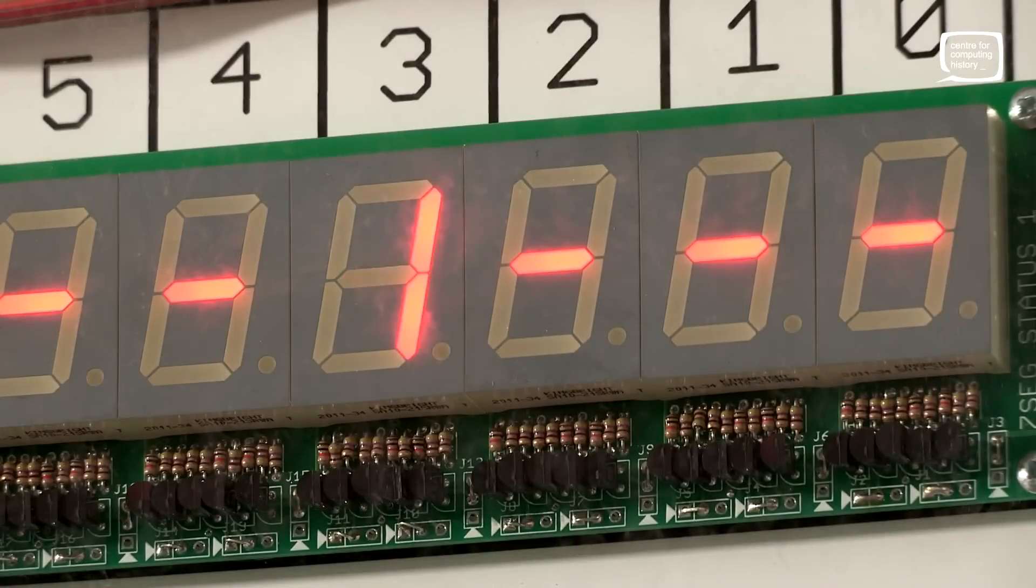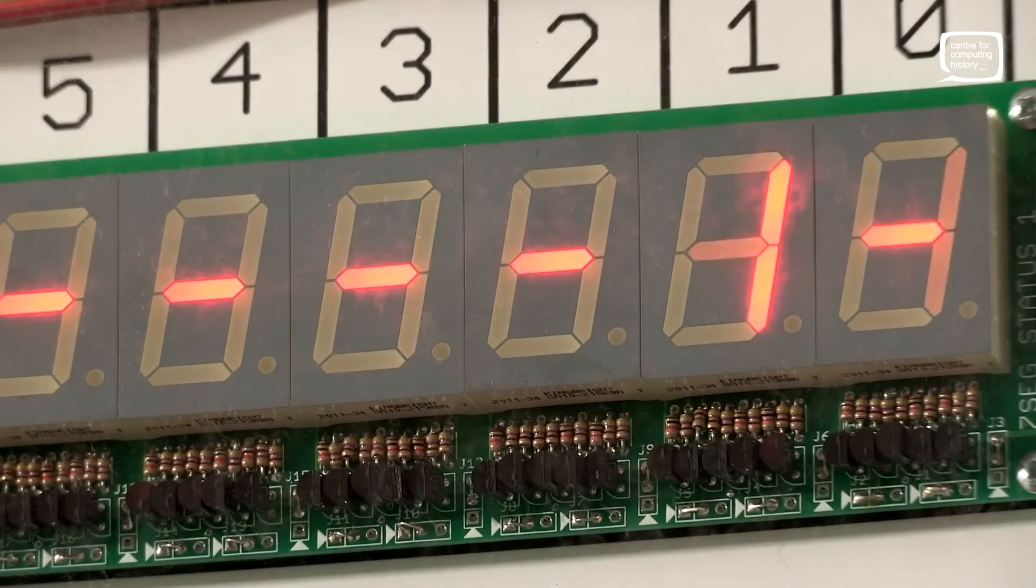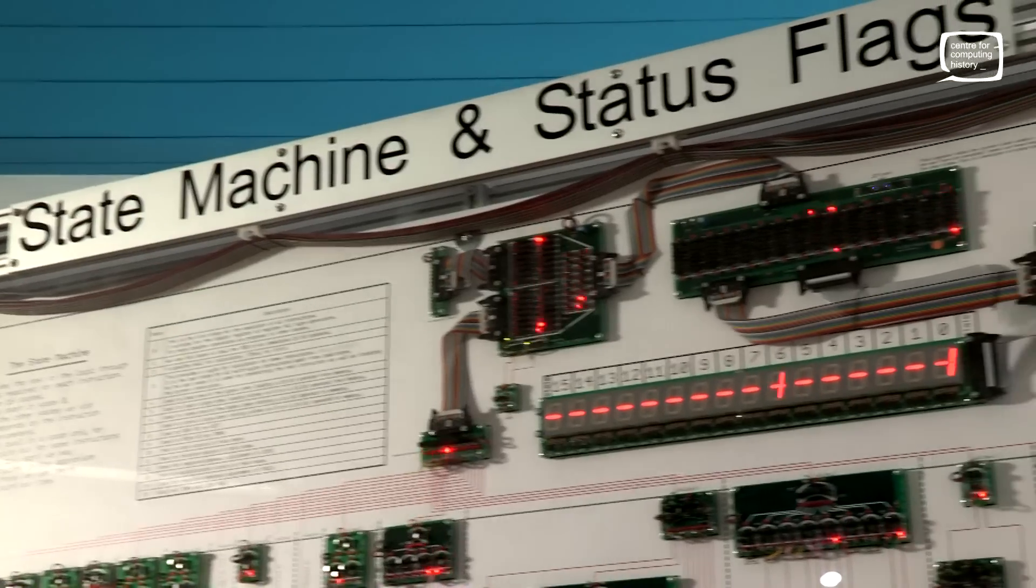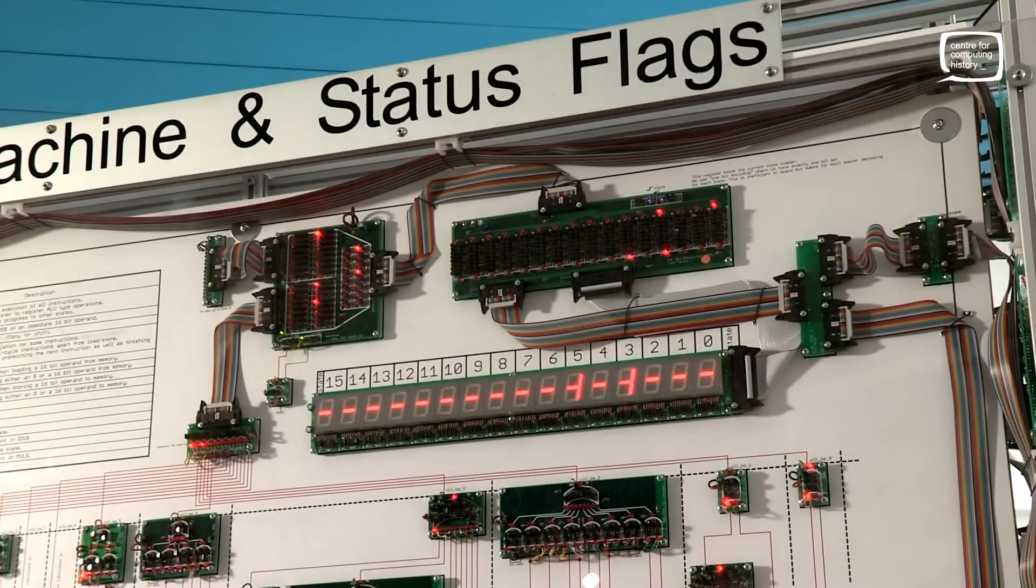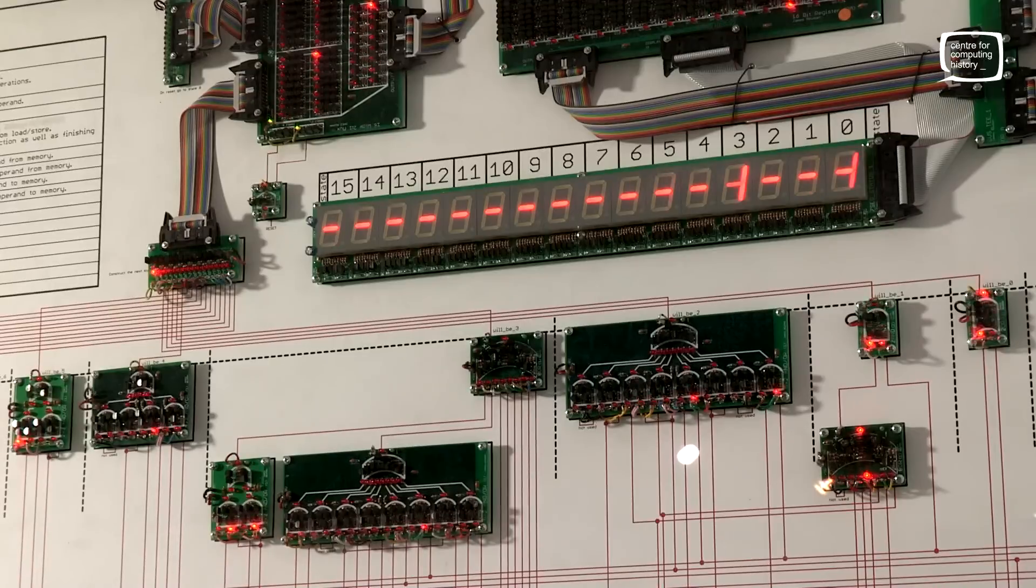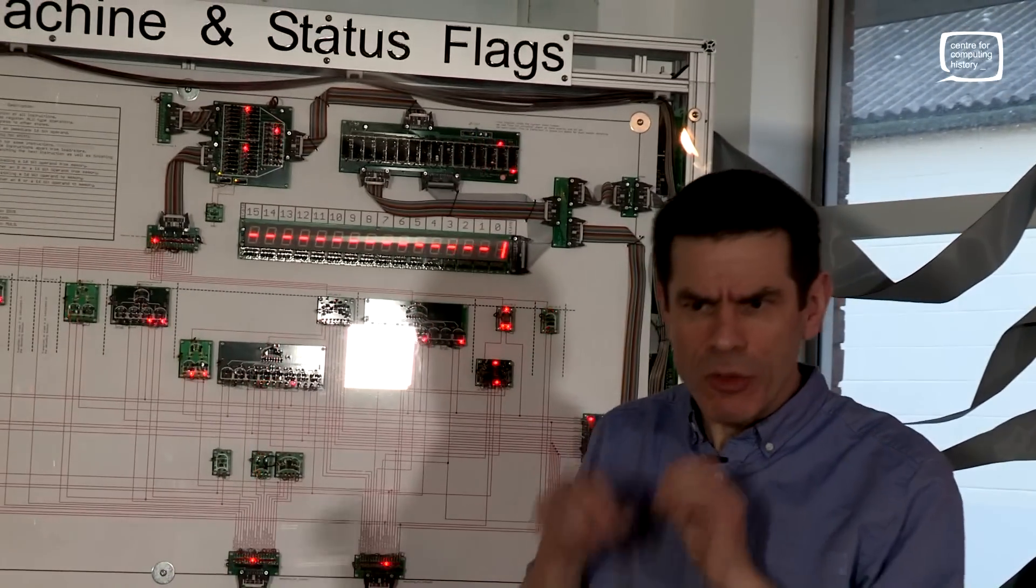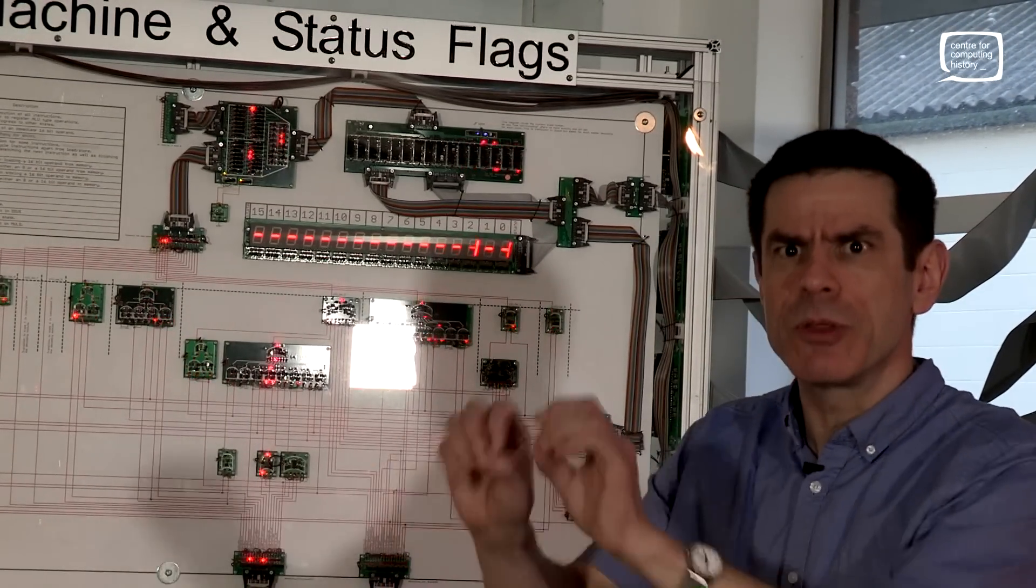The register up here is quite interesting. It behaves differently to the other registers, really. So this is the state machine. This is what really controls how the computer behaves. Some instructions are simple and take just a single clock cycle to carry out. Clock cycles are the things which drive a computer through its paces.